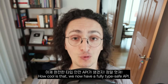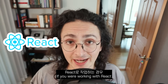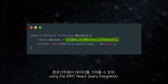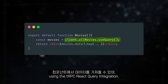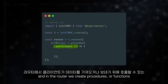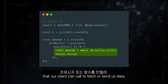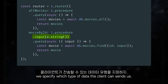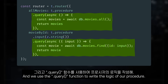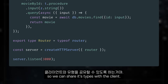How cool is that? We now have a fully type safe API. If you were working with React, you can fetch data in your components using the tRPC React Query integration. To recap — in the backend, we create a router, and in the router we create procedures or functions that our client can call to fetch or send data. Using functions like input, we specify which type of data the client can send us. We use the query function to write the logic of our procedure. Finally, we export the type of the router so we can share it with the client.